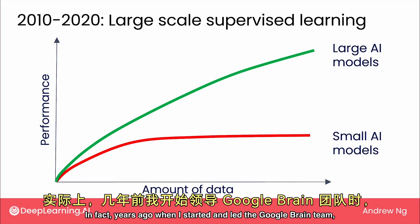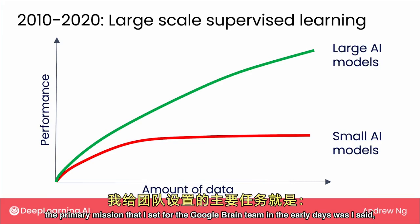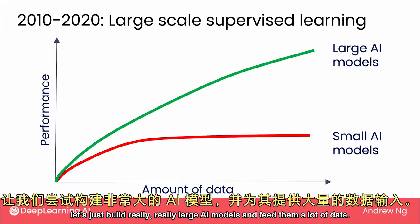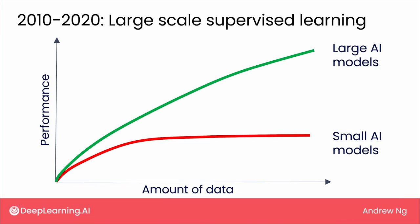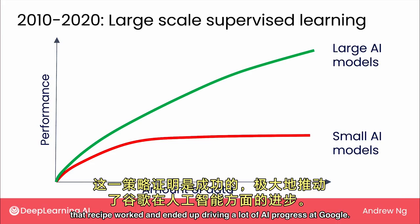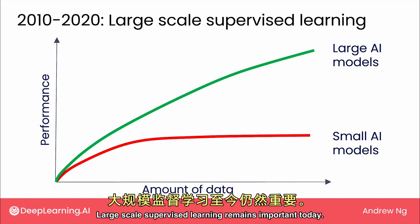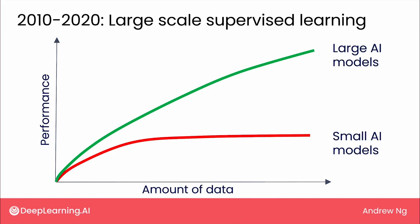In fact, years ago, when I started and led the Google Brain team, the primary mission that I set for the Google Brain team in the early days was: let's just build really, really large AI models and feed them a lot of data. And fortunately, that recipe worked and ended up driving a lot of AI progress at Google. Large-scale supervised learning remains important today.